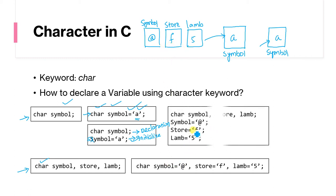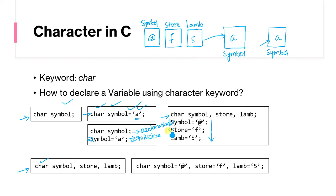The same can also be written by declaring the variables on one line and assigning the values in subsequent lines: symbol = '@', store = 'f', lamp = '5'. Note that variable names should use lowercase letters, matching how they were declared — small s for symbol, small s for store, small l for lamp.